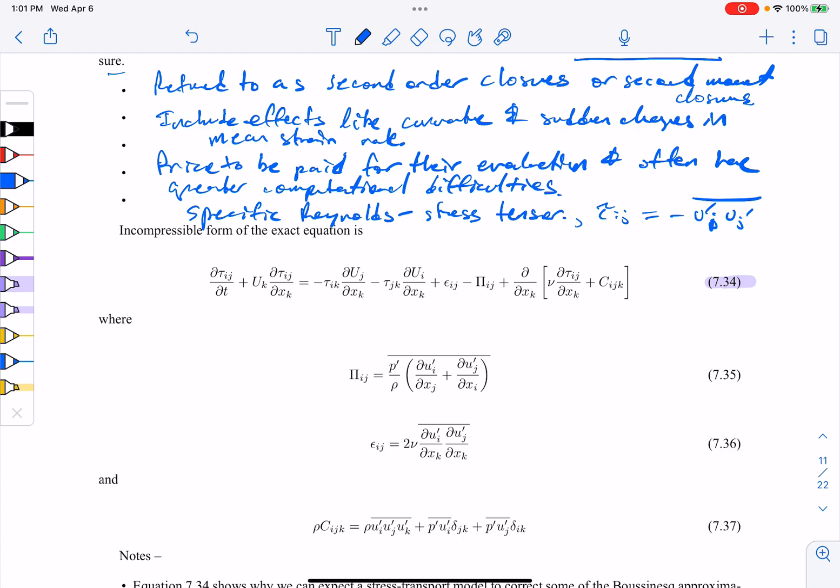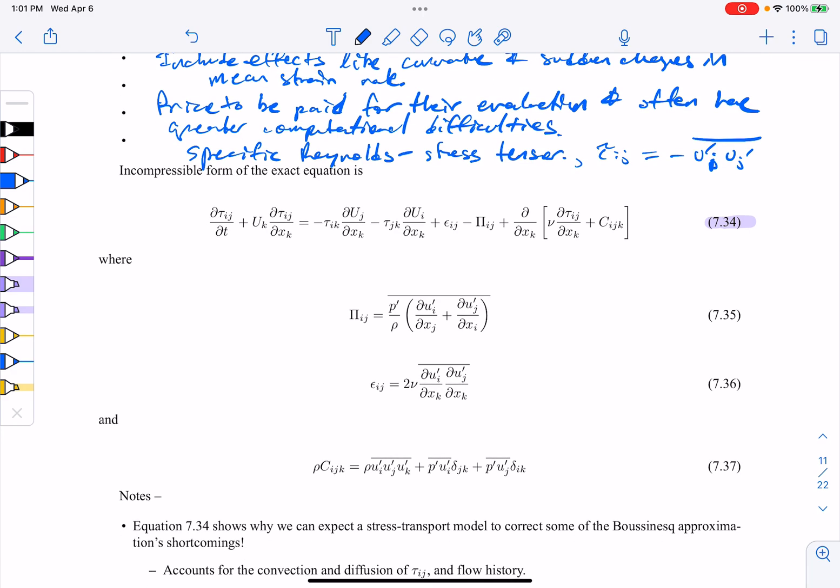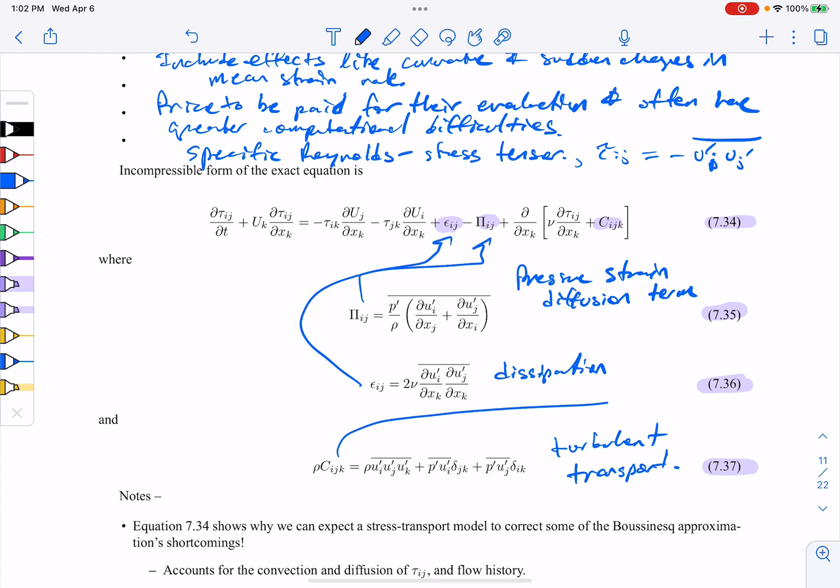So here's the form transport type equation, and for closure it has three major terms which are listed here in the equation where I'm highlighting them. The first one, 7.35, this is the pressure strain diffusion term. The second is the dissipation, and the third is called turbulent transport. We're just going to talk about the basic closures of these three in some order of increasing difficulty. So we'll probably talk about 7.36 first, and then 7.37, and then 7.35. The 7.35 is probably the most difficult to close.